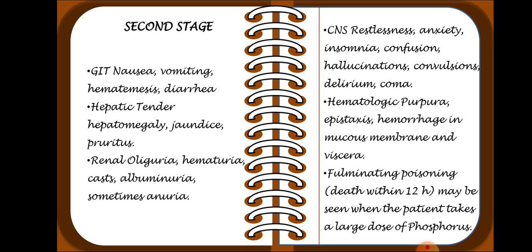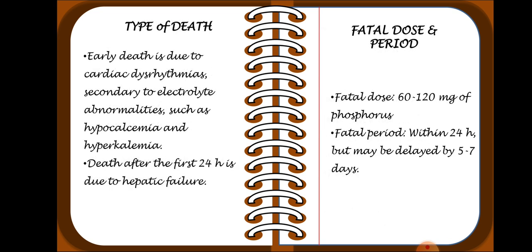Fulminant poisoning — that is, death within 12 hours — may be seen when the patient takes a large dose of phosphorus. Early death is due to cardiac dysrhythmia secondary to electrolyte abnormality such as hypocalcemia and hyperkalemia. Death after the first 24 hours is due to hepatic failure. The fatal dose is 60 to 120 mg of phosphorus. The fatal period is within 24 hours but may be delayed by 5 to 7 days, depending upon the amount of phosphorus ingested.